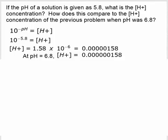And in the previous problem, we had 0.00000158. So the solution with pH 5.8 has an acidity that is 10 times what it was at 6.8.